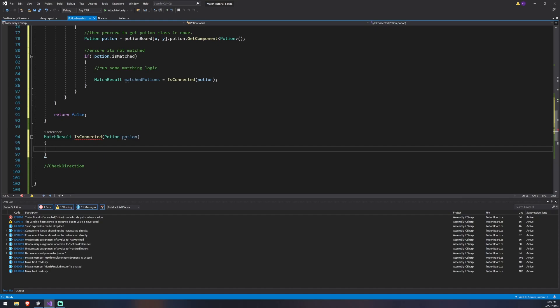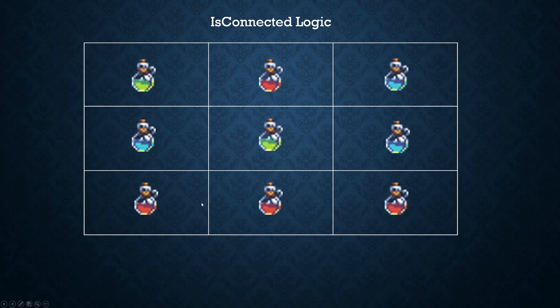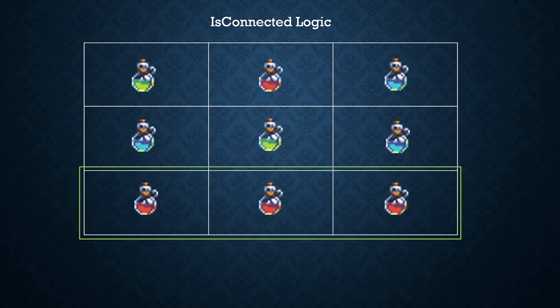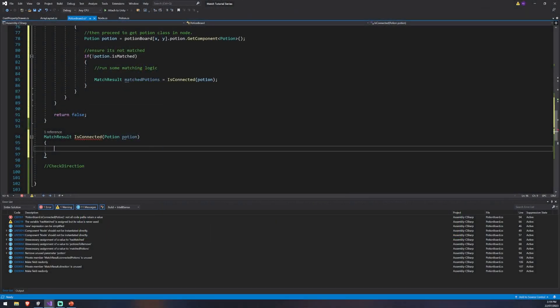Before writing the code I want to give a quick visual of how it works. Say this is our board and we're starting at 0,0 — the bottom left — and running along. We check everything horizontally and vertically from each potion: above, below, left, and right. If we find three matching potions, say three red ones in a row, we mark them as matched. We then move to the next potion at 1,0, and because we've already written the logic to check if a potion is already matched, we won't process it again — avoiding duplicates. Every unique match will be found that way.